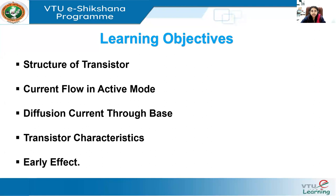We will see the current flow when the transistor is in active mode of operation, and also the diffusion current — that is the movement of electrons or holes in case of the NPN transistor. We will focus the discussion on diffusion current to the base, get a deep understanding of transistor characteristics, the influence of temperature, and introduce the early effect, also called base width modulation.